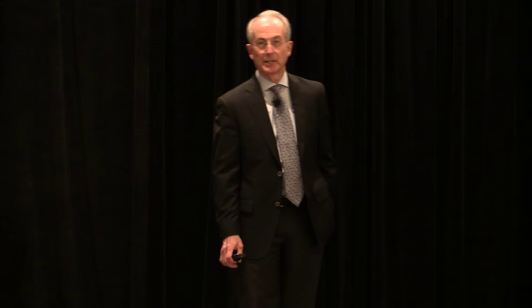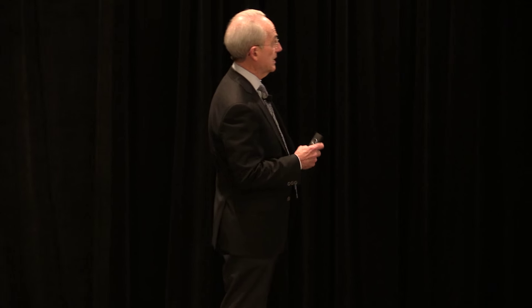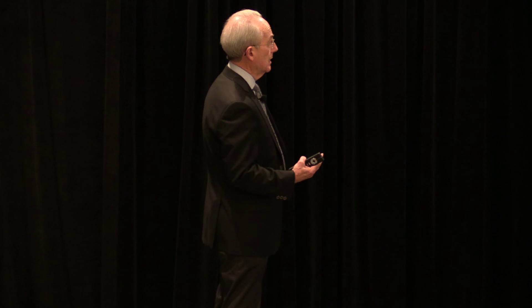I'm Pat Allen and this morning I'll be giving a synopsis or brief lecture on aesthetic crown lengthening. If we look at this as an example of the problem that we see with patients who have a high lip line and a gummy smile and basically short teeth. This has been called altered passive eruption — a soft tissue problem essentially — or it might be altered active eruption, which is more of a bony problem where the bone is at the CEJ and requires alteration for treatment. I like to call this inadequate exposure of the anatomic crown because it's a more descriptive term of the problem, and I think it makes a bit more sense when we use that terminology with a patient.